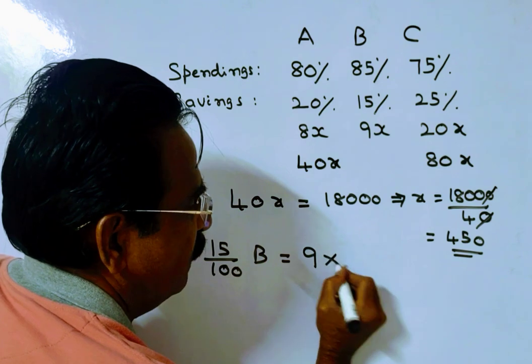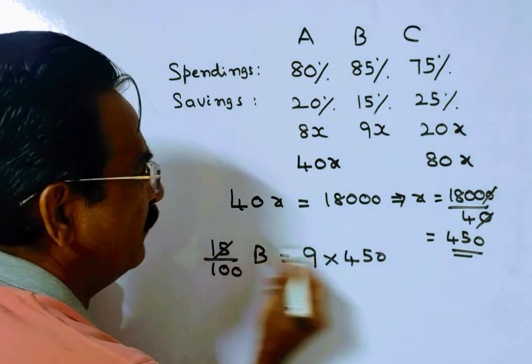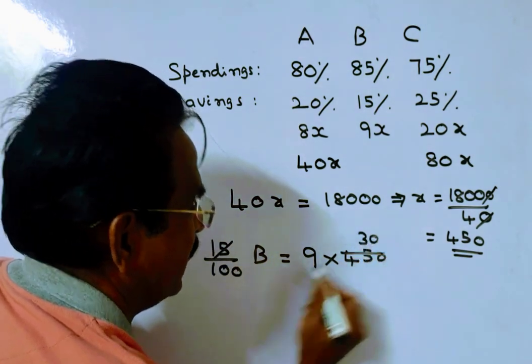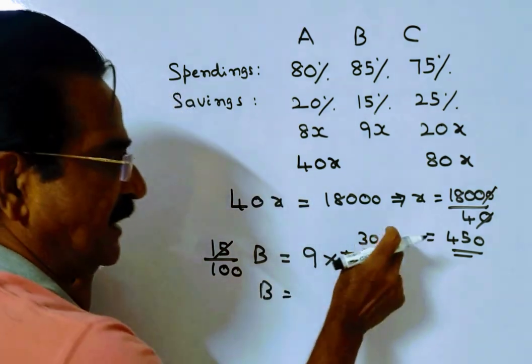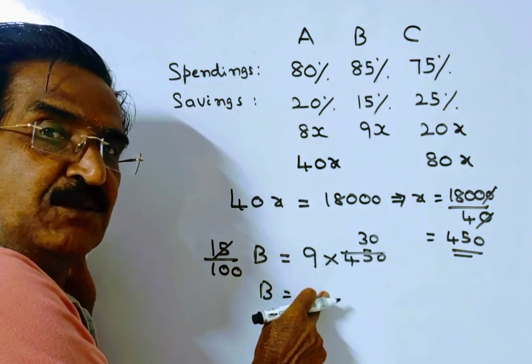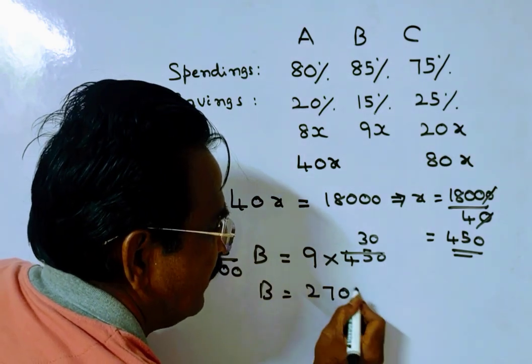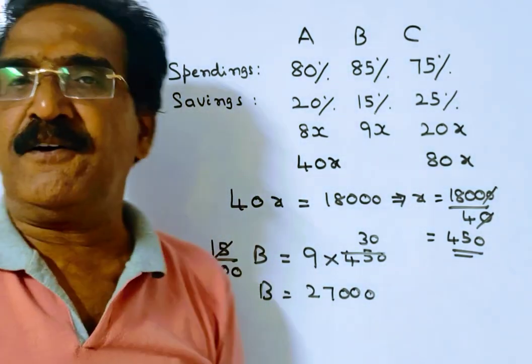X is equal to 450. So 15% of B equals 9 times 450. B is equal to... calculating... 27,000. This is the income of B, friends.